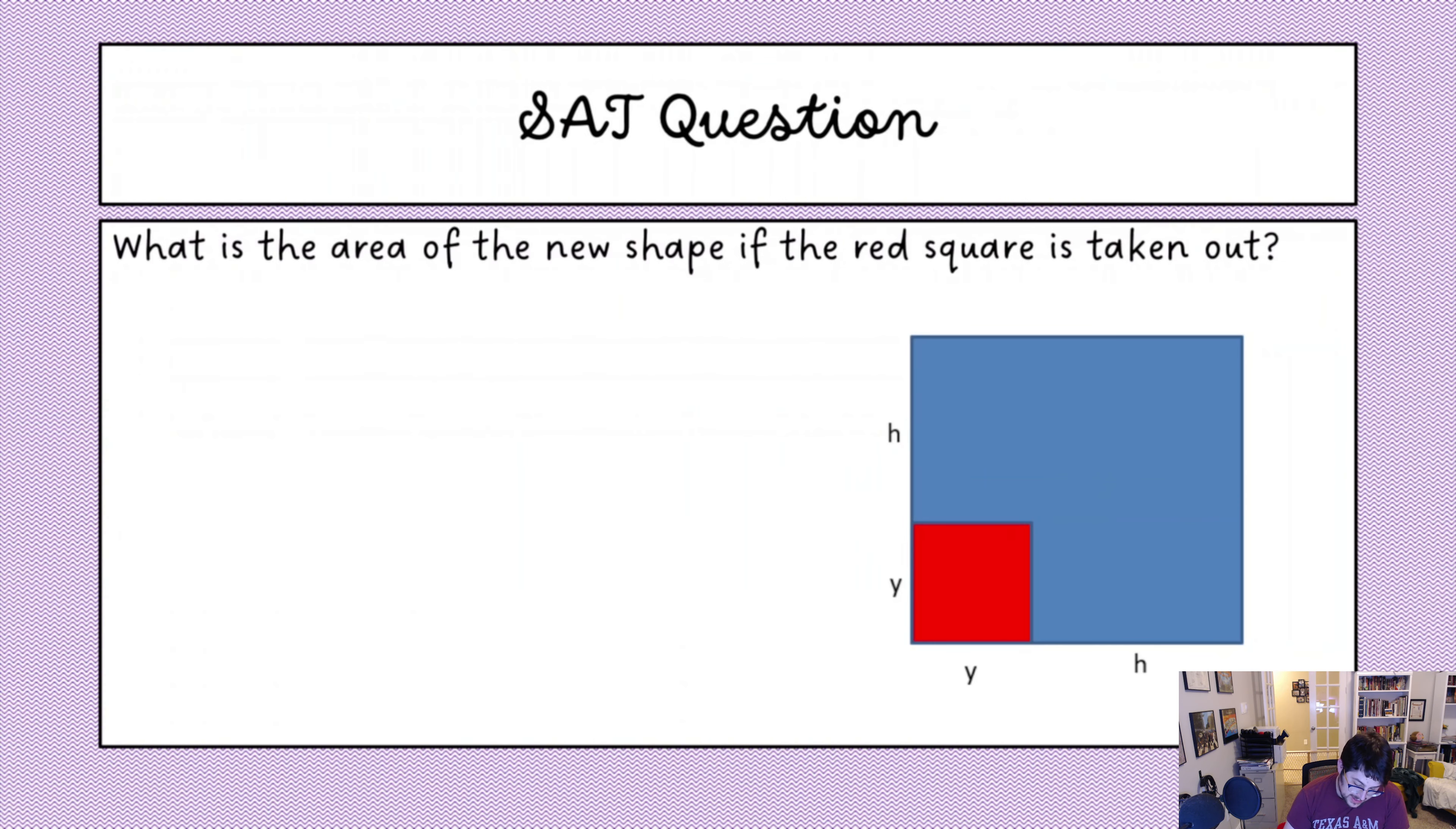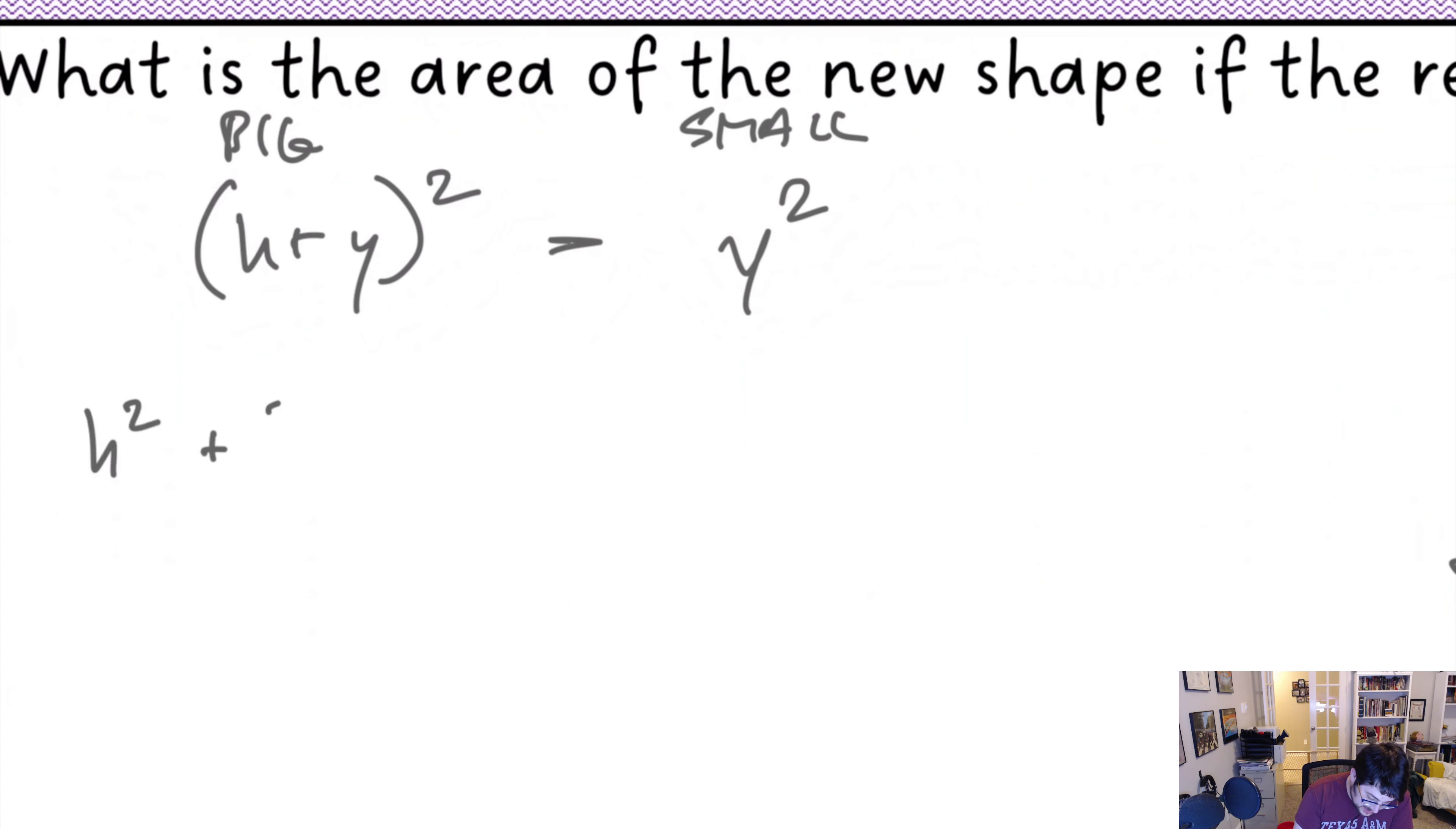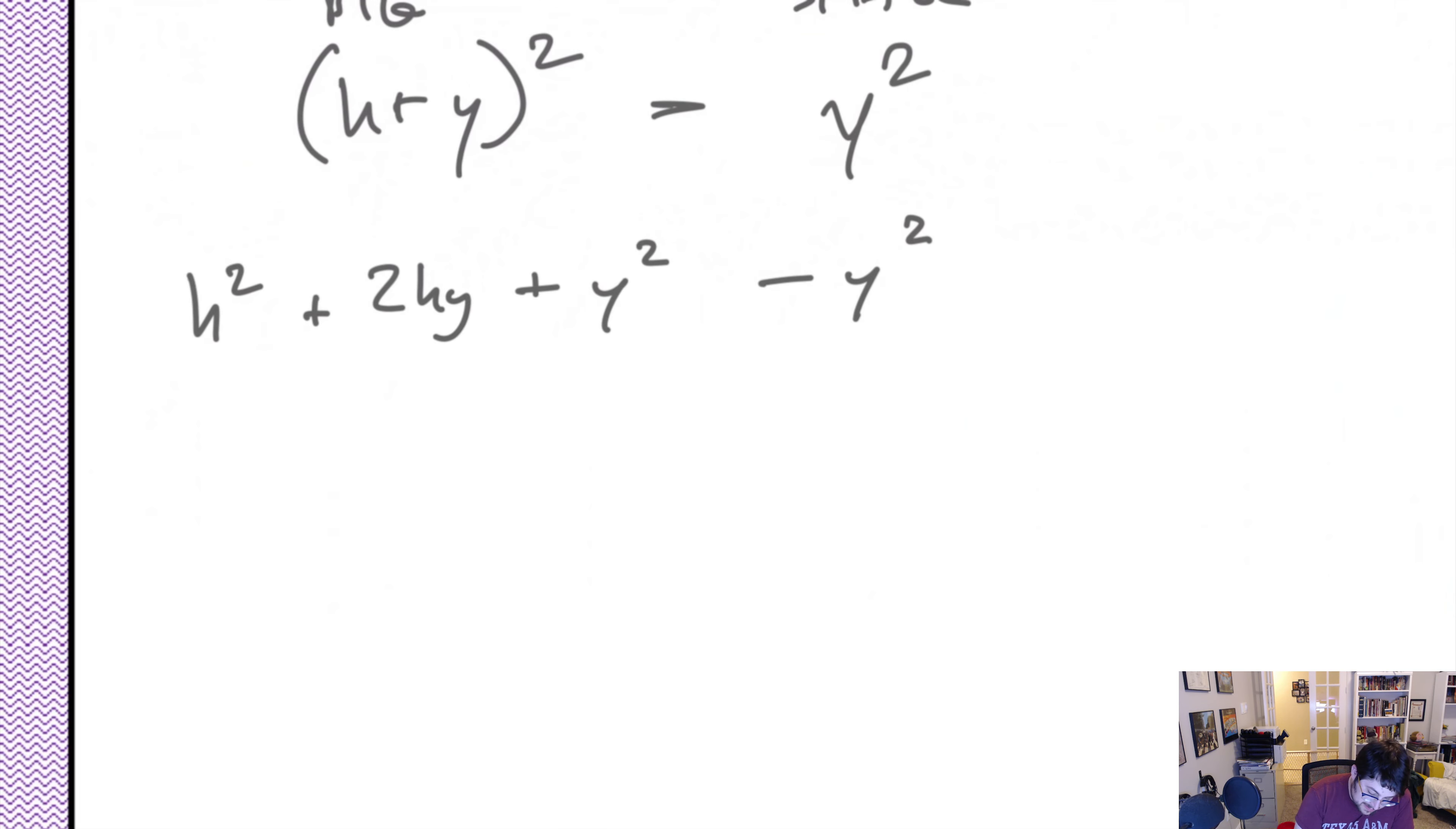All right. What's the area of the new shape if the red square is taken out? Well, what we can do is the area of the overall square is essentially h plus y. So, we're just going to say big square h plus y squared, because both sides are h plus y. The area of the small red square is essentially y squared. We're going to subtract those. Now, h plus y squared would be h squared plus 2hy plus y squared. And we are subtracting y squared. That means that this bit cancels out. So, we're left with h squared plus 2hy. That would be our answer.